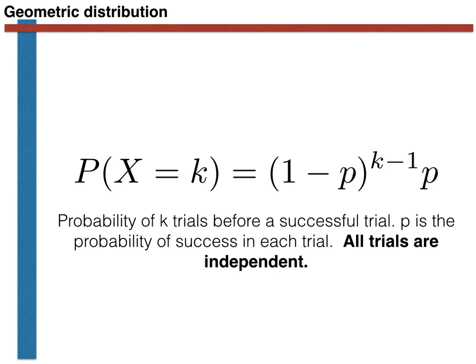In other words, this probability, P(X=k), is the probability that the first k-1 trials you perform are unsuccessful, and that your kth trial is a success.